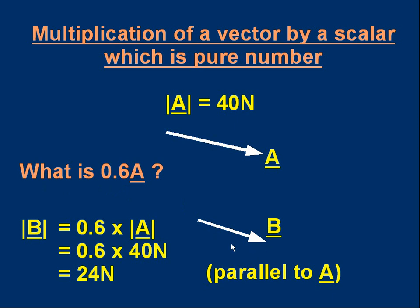How big is this vector? The magnitude of it is simply 0.6 times the magnitude of a. So the magnitude of b is 0.6 times 40 newtons, which is 24 newtons. This new vector is represented by a smaller arrow — it's 0.6 times as big as the arrow for a. You'll note the direction hasn't altered; the direction is parallel to the original direction of a. So multiplying by this positive scalar hasn't changed the angle but it has changed the magnitude.